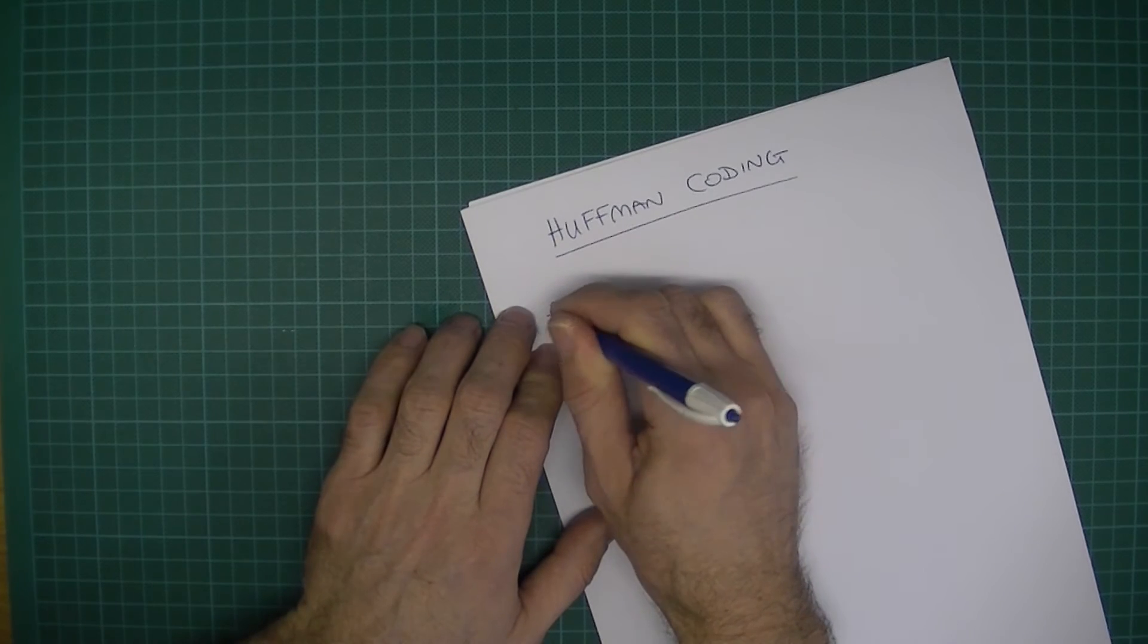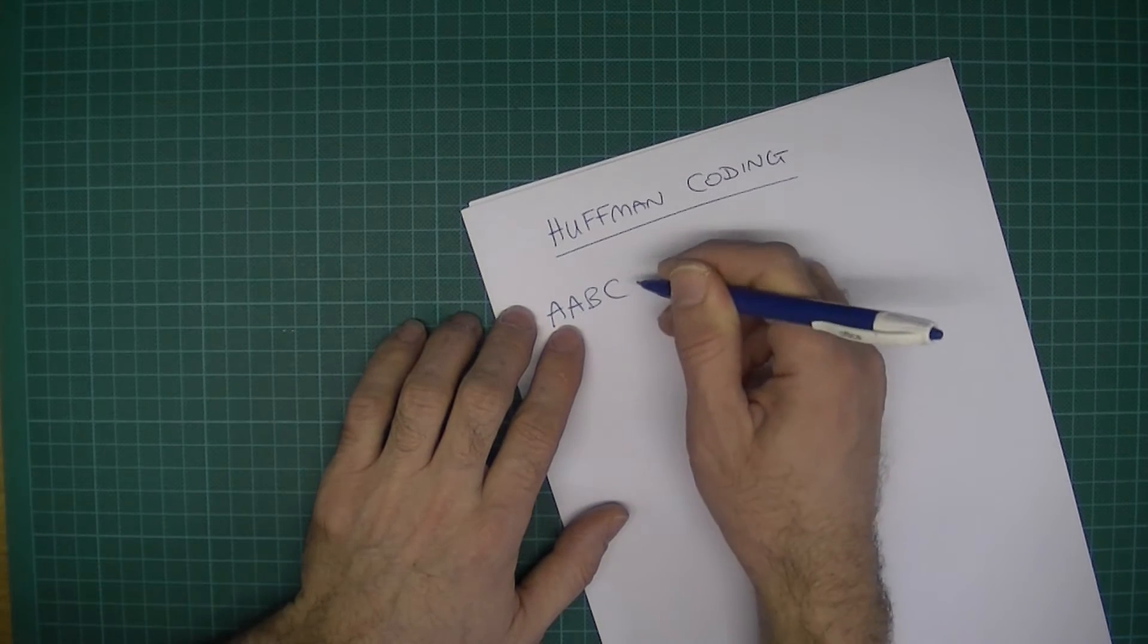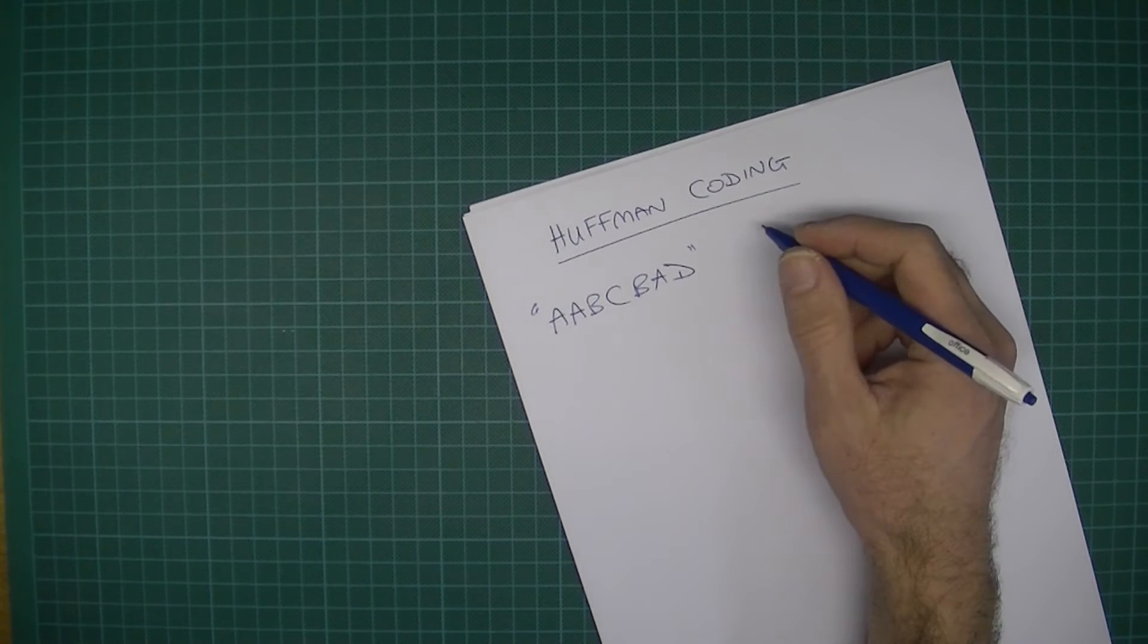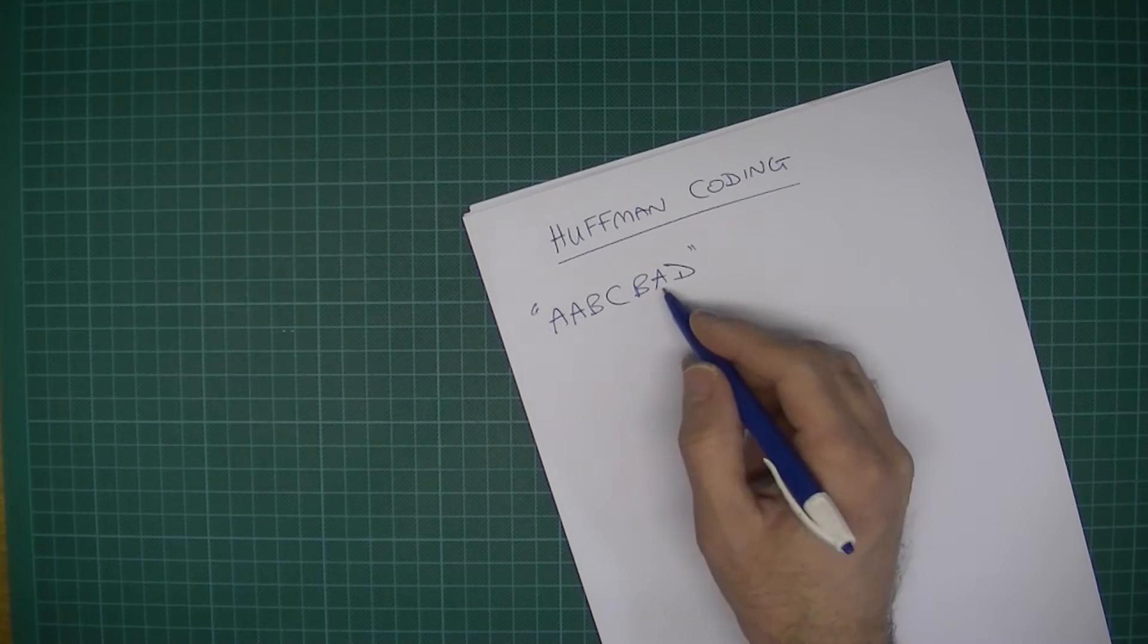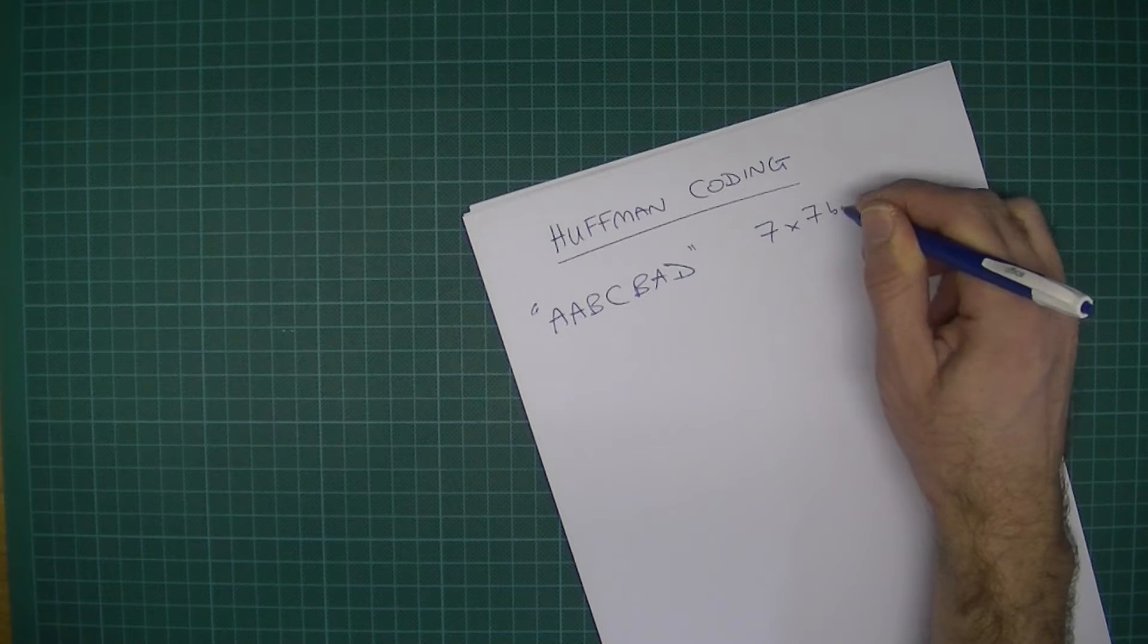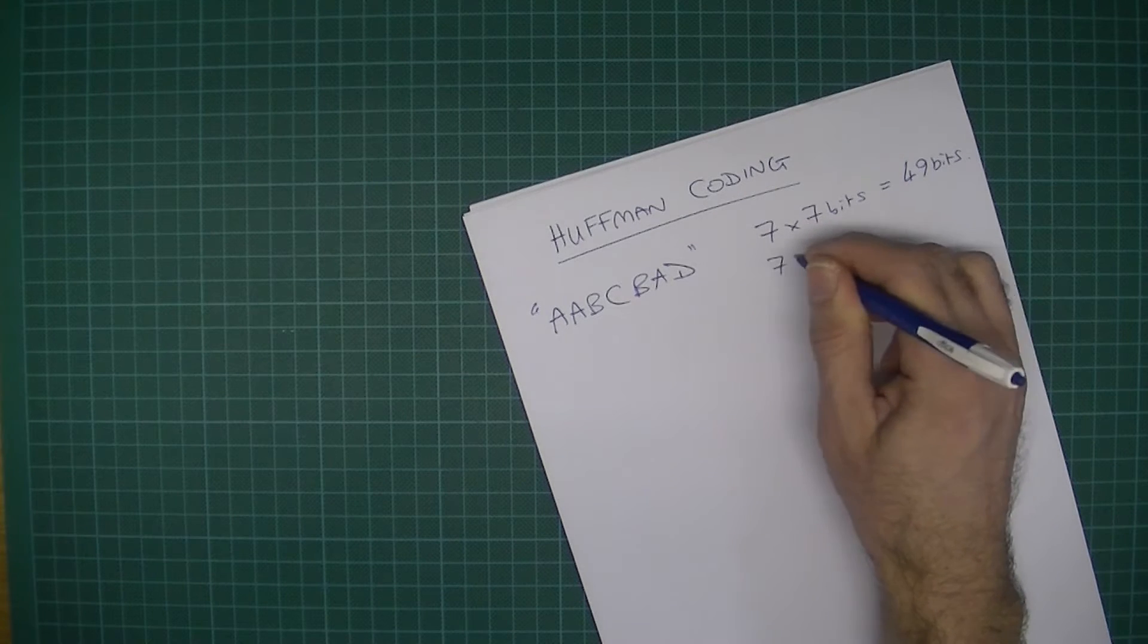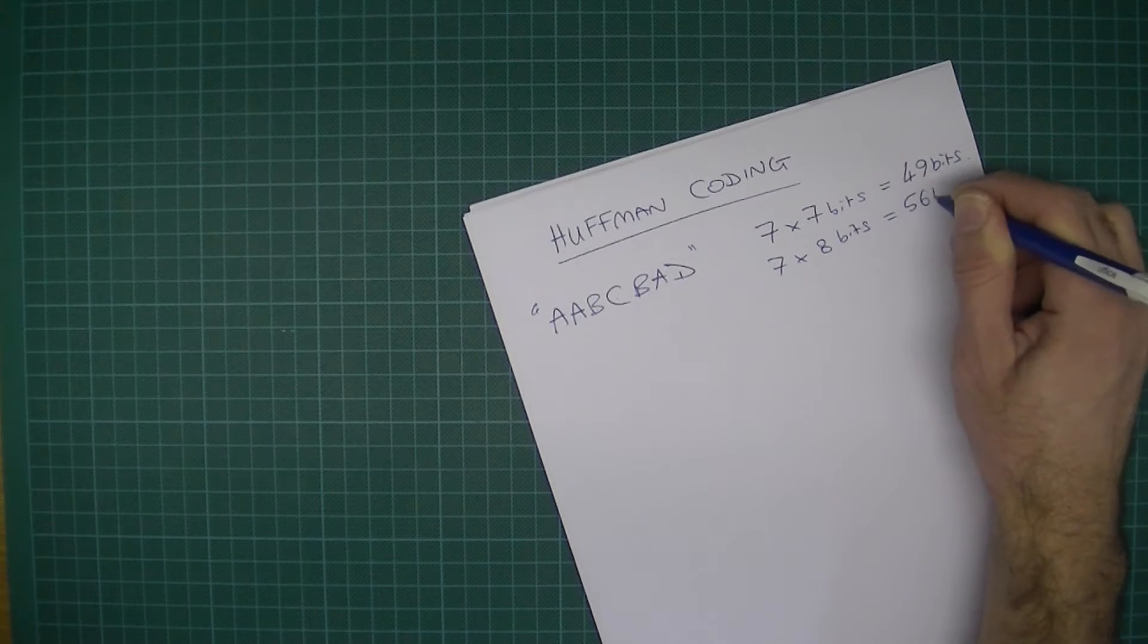Let's get some text that we're going to code up: AABCBAD. If I were going to code that in ASCII, that's seven characters. If I were using 7-bit ASCII, that would be 49 bits that I would need, and if I were using 8-bit ASCII, that would be 56 bits.